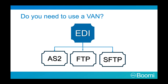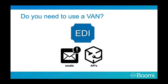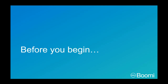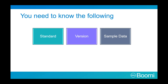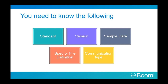This concludes this section of the class. Before you begin creating an EDI process in Boomi, you need to know the following: what standard you are using, such as X12, EDIFACT, or RosettaNet; the version being used, such as 4010 or 5010; and you need sample data so you understand what you are loading into your system. From the sample data, you can determine the transaction type to get the spec. If the spec is unavailable — such as when using a custom standard — you need a file definition. Finally, you need to understand the communication type: what are you sending to, receiving from, are you using a VAN, and how do you connect?